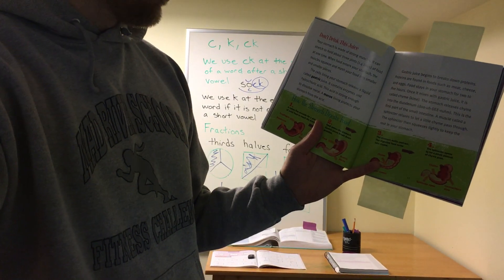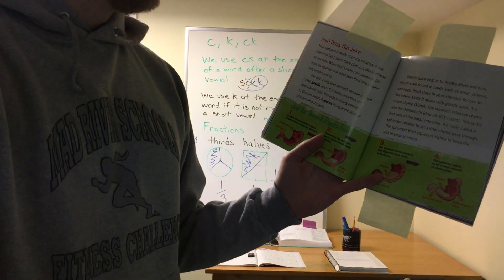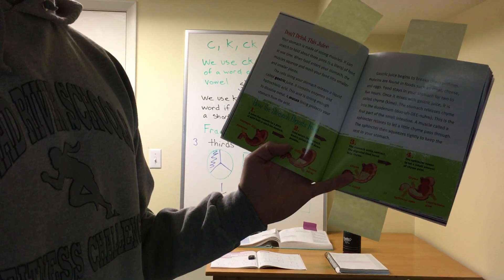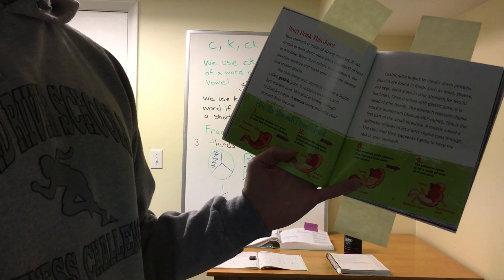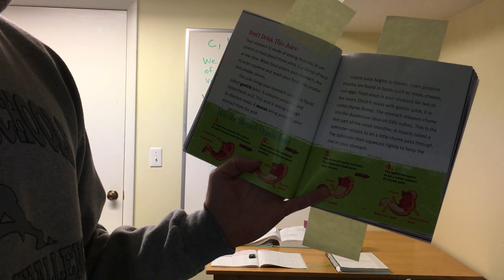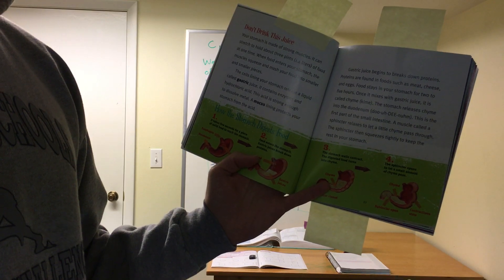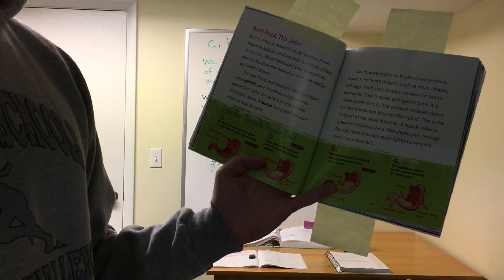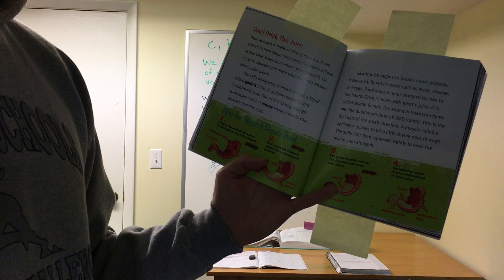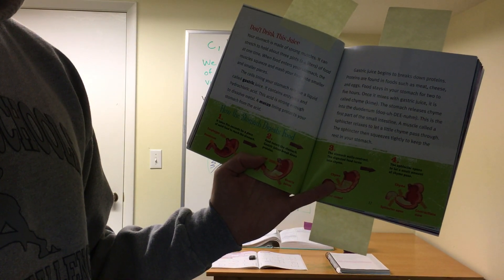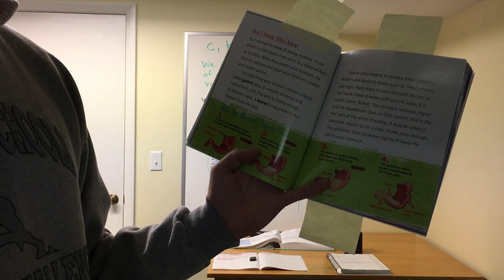A mucus lining. Mucus is kind of like snot. A lining protects your stomach from the acid. Gastric juice begins to break down proteins. Proteins are found in foods such as meat, cheese, and eggs. Food stays in your stomach for about two to five hours. So try not to eat too late. Otherwise, this has got to sit in your stomach at night. Once it mixes with the gastric juice, it is called chyme. The stomach releases chyme into the duodenum. And this is the first part of the small intestine. A muscle called a sphincter relaxes a little to let chyme pass through. The sphincter then squeezes tightly to keep the rest in your stomach.